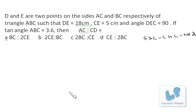Let's see this problem from CGL paper 2013. D and E are two points on the sides AC and BC respectively of triangle ABC such that DE is 18 cm, CE is 5 cm, and angle DEC is 90 degrees. If tan angle ABC is 3.6, then we have to find the ratio AC to CD.